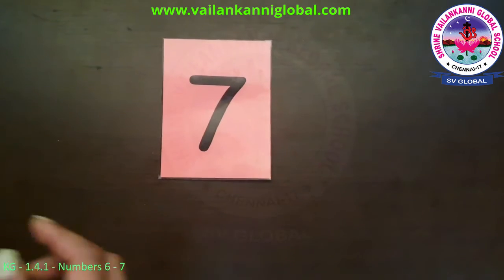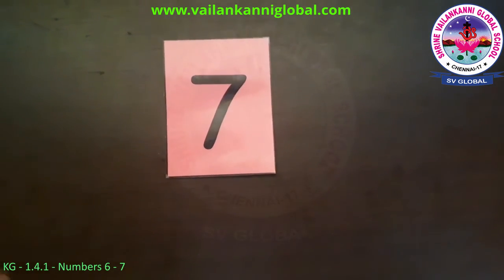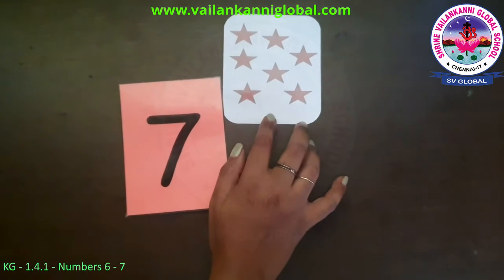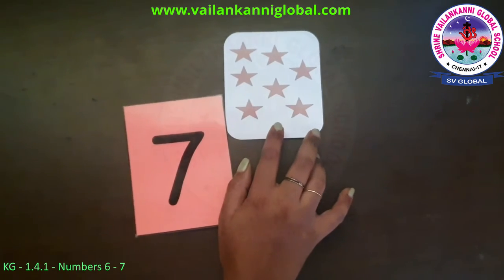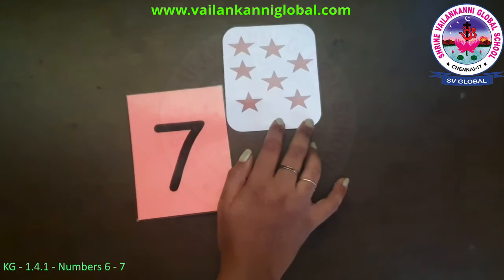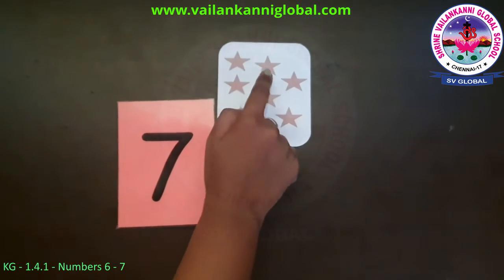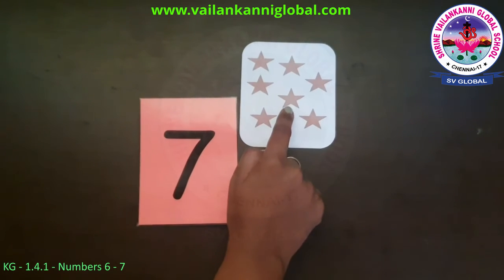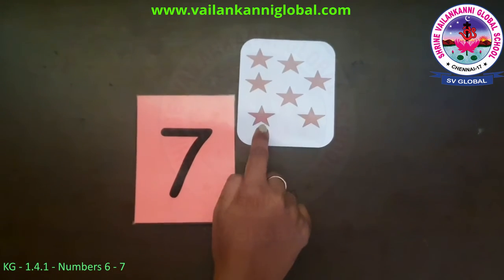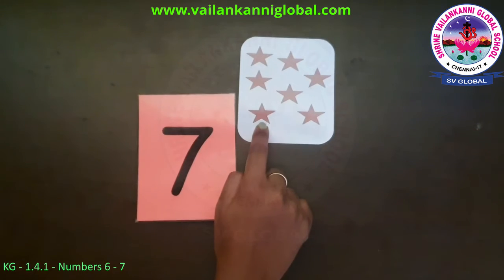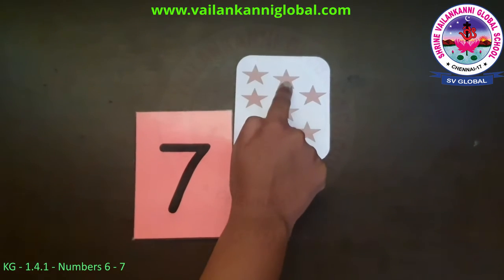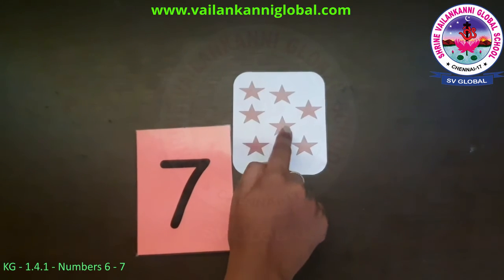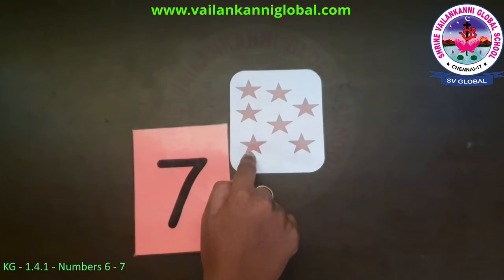Now let's see some pictures and count. What's that? Those are stars. Now let's count how many stars there are. One, two, three, four, five, six and seven. Let's count one more time. One, two, three, four, five, six and seven.